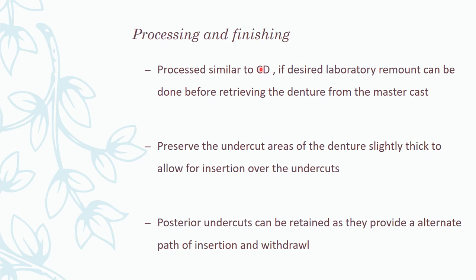Processing and finishing of the conventional immediate denture: it is processed similarly to a complete denture. A lab remount can and should be done if desired. The undercut areas of the denture should be slightly thinned to allow insertion over the undercuts, and a straight-line path of insertion must be maintained. Posterior undercuts can be retained as they provide an alternate path of insertion and withdrawal in certain cases.